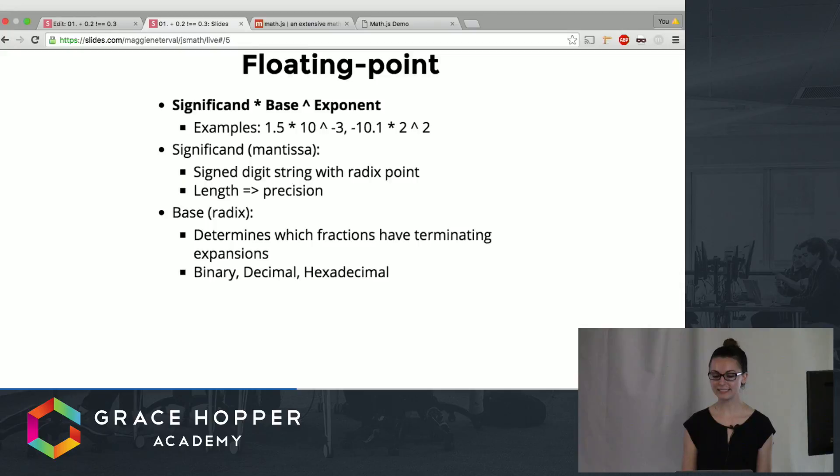It can be either positive or negative. It has a radix point and its length determines how precise the number is stored. So if you have more digits you can store a more precise representation of the number.